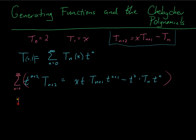So what I'm going to get out, I'm going to get my big T, but I need to subtract off the first two terms that I'm missing. So T minus 2, and then minus x times t.